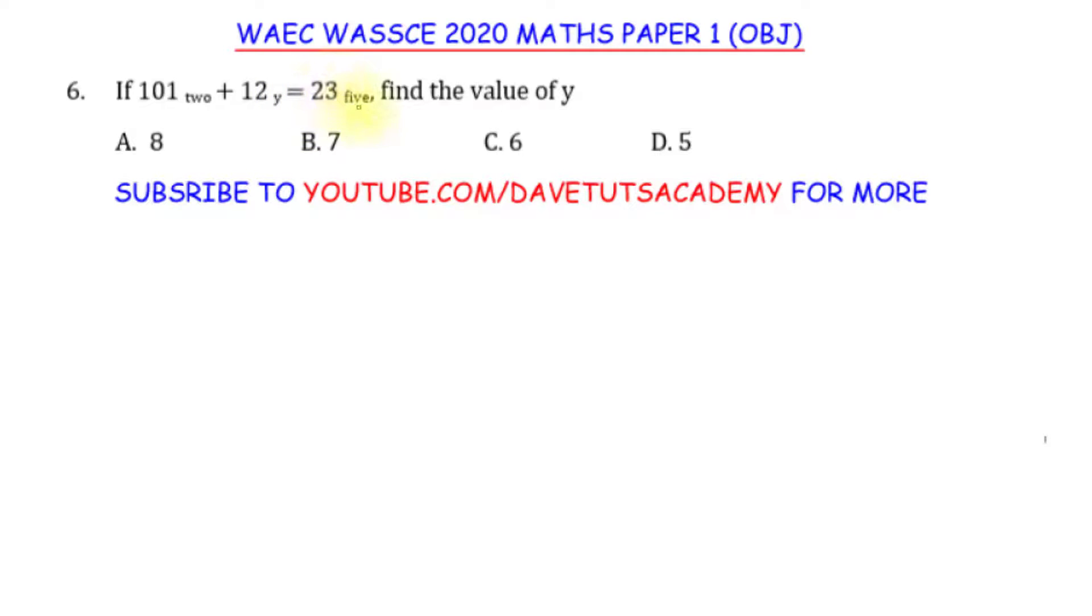And 23 to base 5, convert it to base 10. And this is what we do in that case. Let me write it out like this. We have 101 to base 2 plus 12 to base y equals 23 to base 5. Now this is what we do.